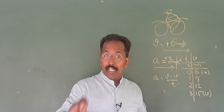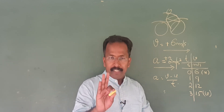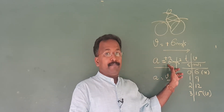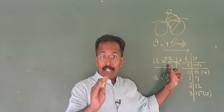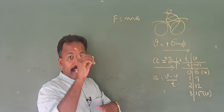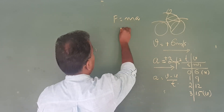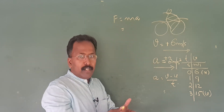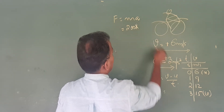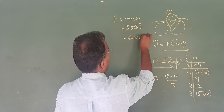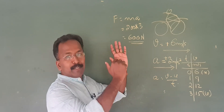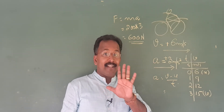Now we complete the third and fourth chapters. This is the basic idea. How much force is it? F is equal to m times acceleration. This is the bike — it is 200 kg. 200 kg into acceleration 3 means 600 newtons. You have to push with a force of 600 newtons.